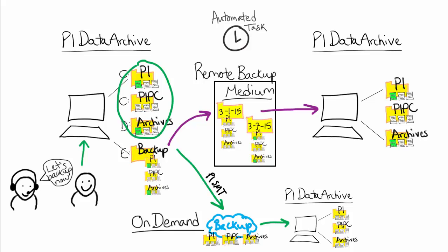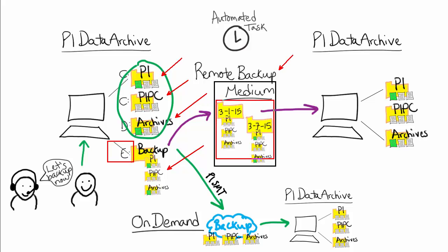Overall, a full backup strategy will include taking a local backup of your PI Data Archive on a dedicated disk drive. This backup should include both your archive files as well as the configuration information that is specific to your PI Data Archive. Then, your backup strategy should include copying the local backup directory to a remote medium, ideally creating a repository of different backups from your PI Data Archive over time. For more information, please check out the following videos to learn more about how to configure an automated backup task as well as perform an on-demand backup.